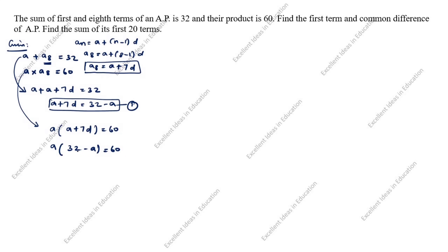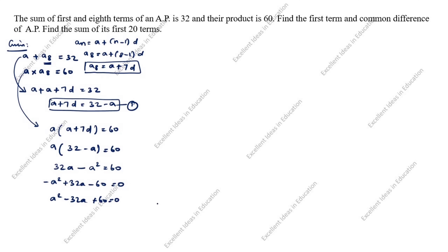Multiplying inside the bracket: 32A minus A squared equals 60. Rearranging: minus A squared plus 32A minus 60 = 0, which gives us A squared minus 32A plus 60 = 0.